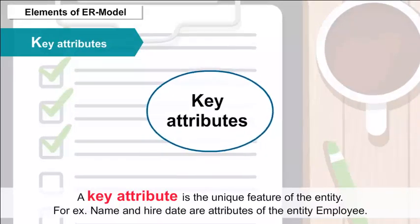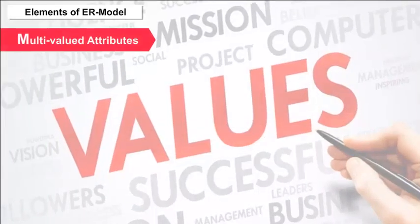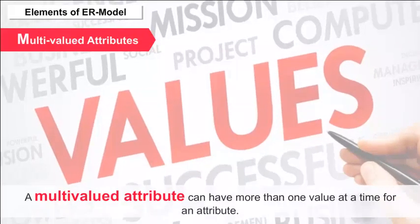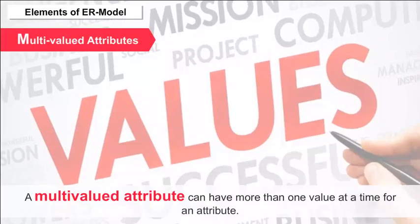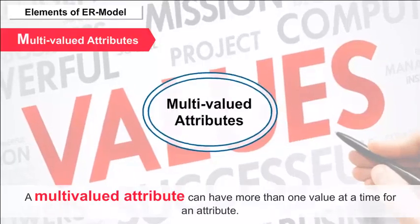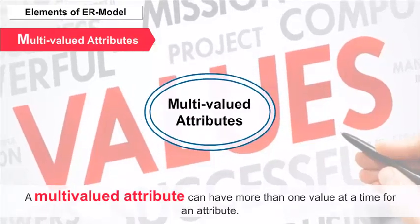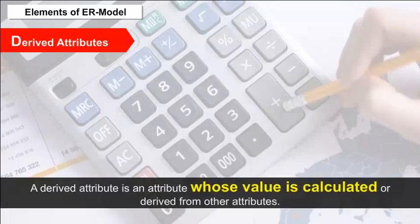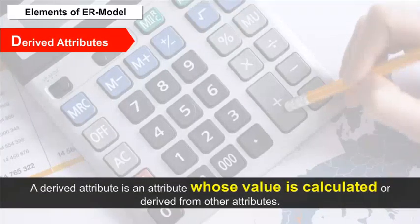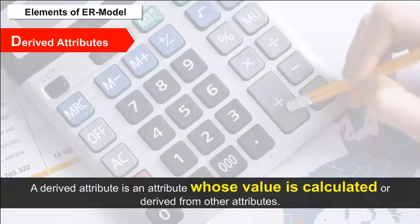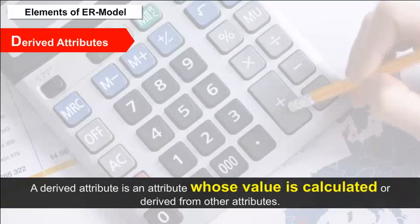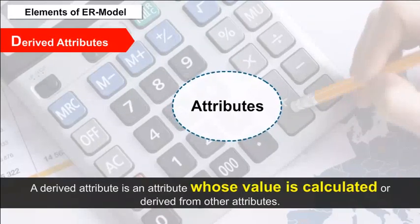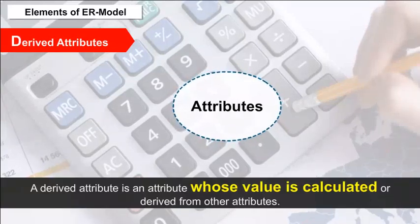Multi-valued Attributes — a multi-valued attribute can have more than one value at a time for an attribute. These attributes are represented in double ovals. Derived Attributes — a derived attribute is an attribute whose value is calculated or derived from other attributes. These are represented by dashed-line ovals.